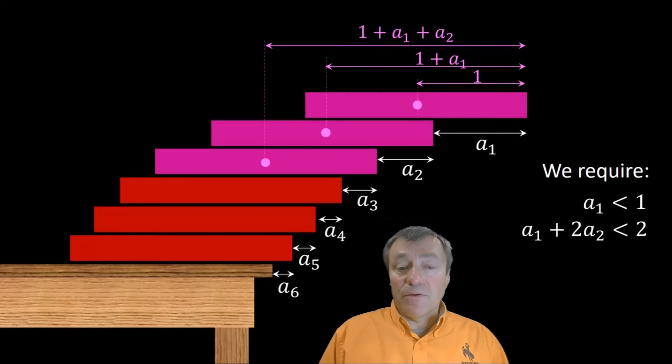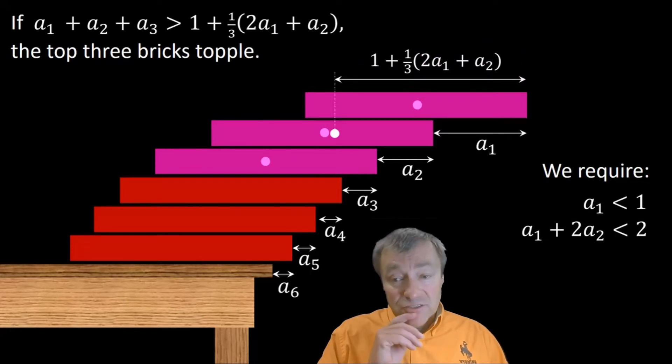Next, we need to worry about the top three bricks. The third brick has center of mass A2 units to the left of the center of mass of the second brick. That's one plus A1 plus A2 units to the left of the far right edge. Take the average of the center of mass of the top three bricks, and you get the center of mass of those top three bricks combined. This point is one plus a third of 2A1 plus A2, that many units to the left of the far right edge, as shown.